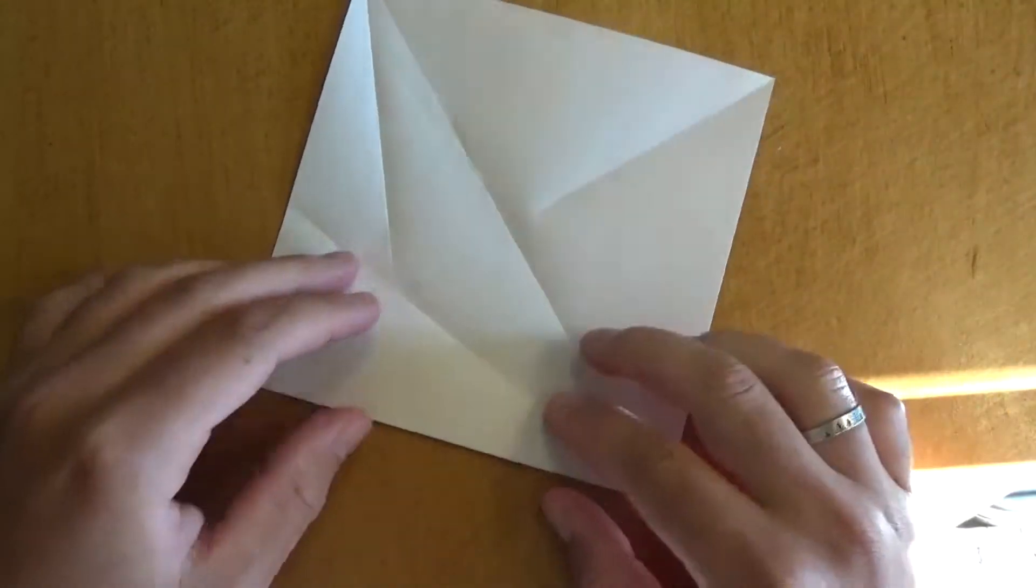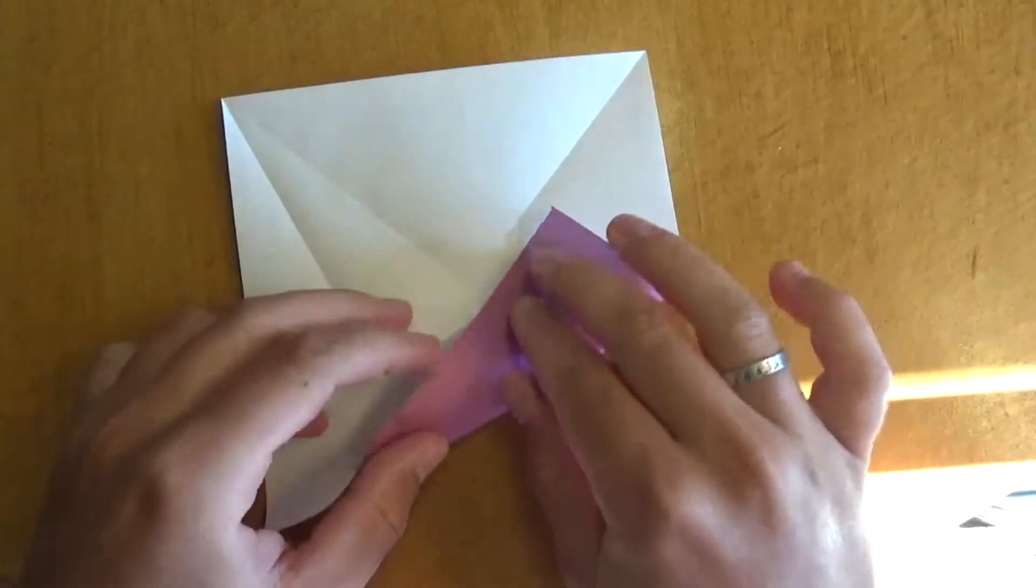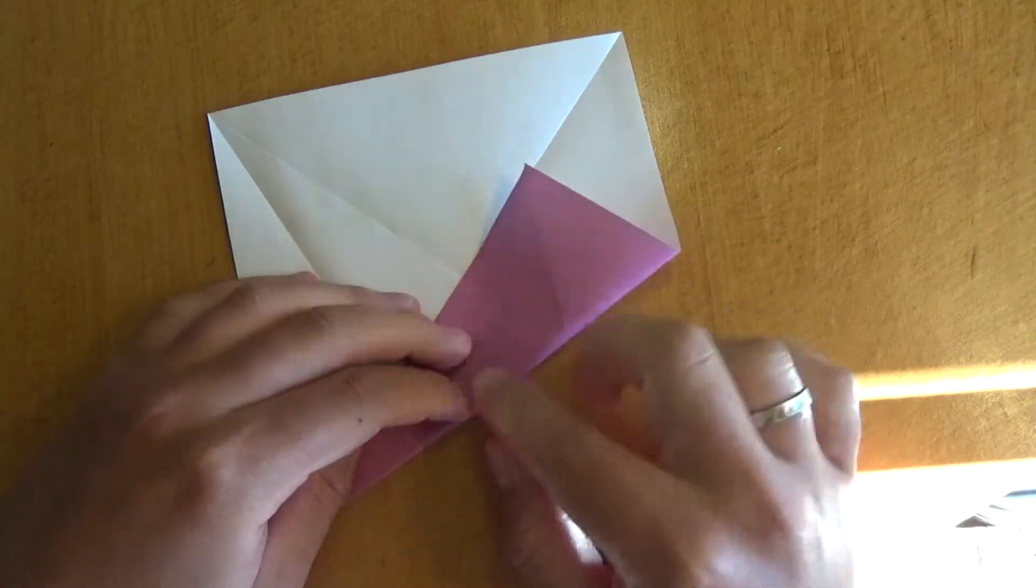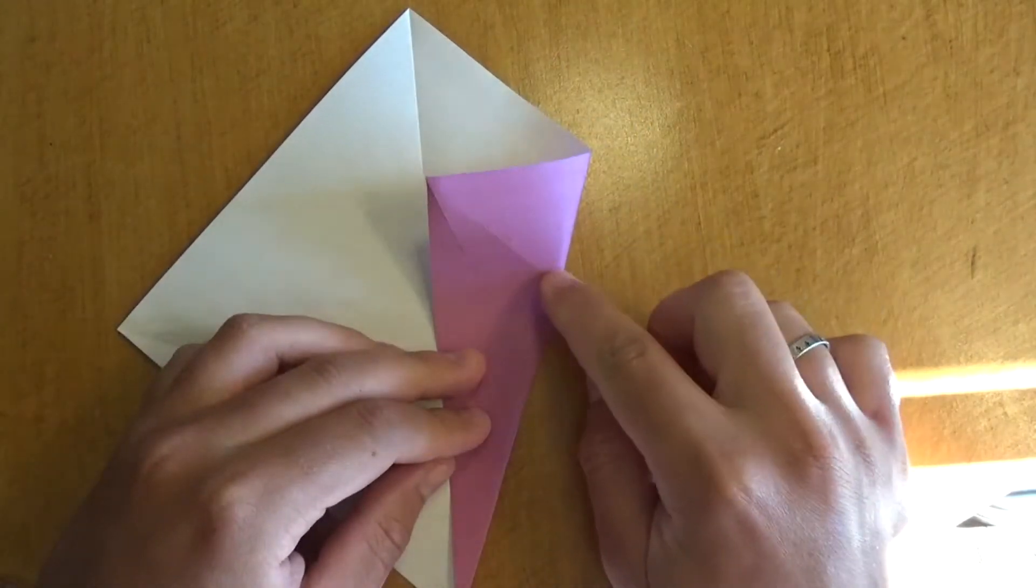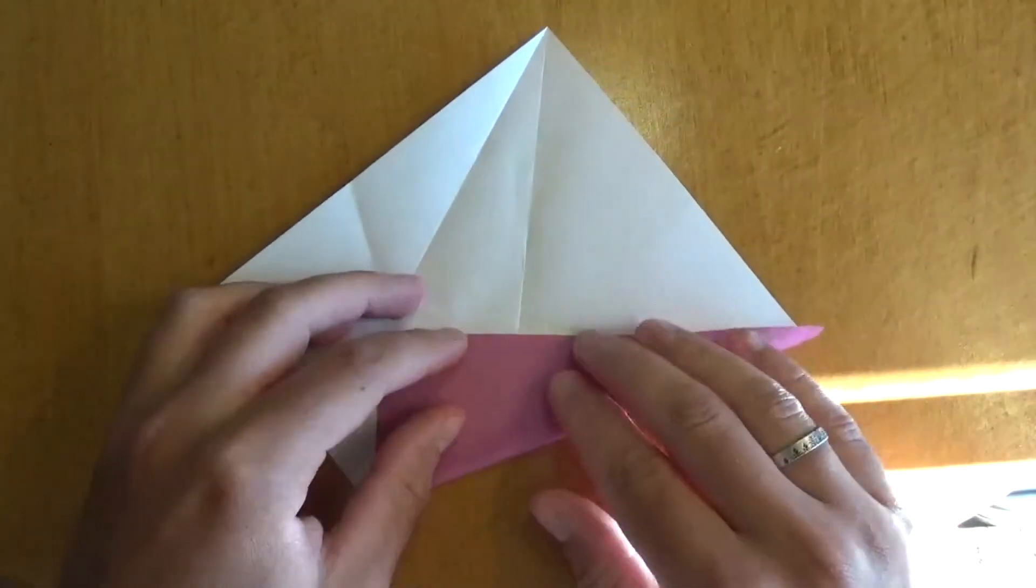Alright, now we're going to do that three more times. So, rotate like this, and fold this edge to the crease. And don't fold the whole thing, just fold to this crease right here. Alright, and now this side.